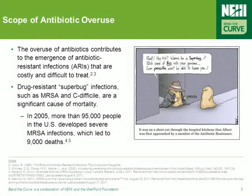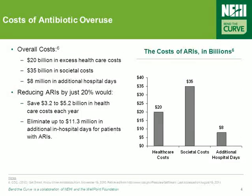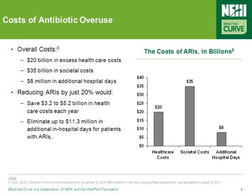In 2005, more than 9,000 people died from MRSA infections alone. This overuse of antibiotics costs the healthcare system a significant amount in financial terms each year — about $20 billion in excess healthcare costs and $35 billion in societal costs. This staggering $60-plus billion price tag, however, does leave a lot of room for improvement. Reducing ARIs by just 20% would save $3–5 billion a year in healthcare costs.